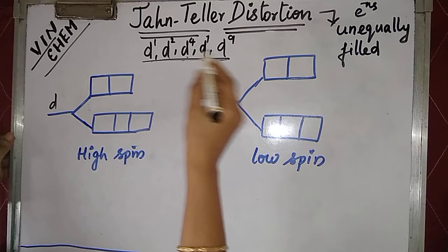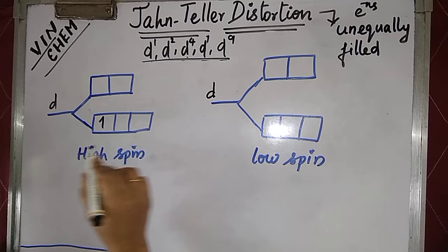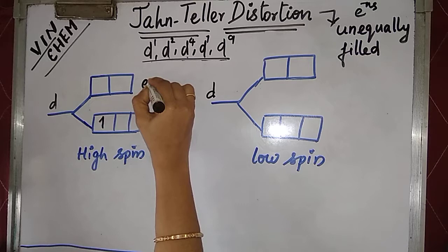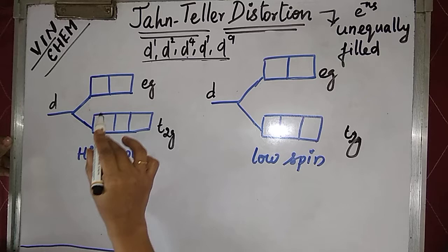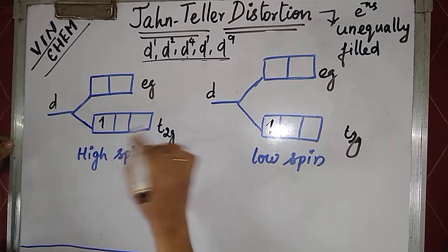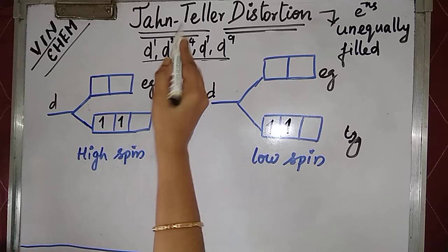Let's see one by one how Jahn-Teller distortion works. The first one: high spin d1 — one electron is filled in the t2g orbital. This is the t2g orbital (triply degenerate) and eg is the doubly degenerate orbital. With d1, we have unequally filled electrons — one is there. Here also unequally filled, so Jahn-Teller distortion is present. With d2, both are unequally filled electrons, so Jahn-Teller distortion is there.